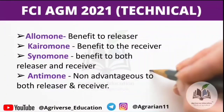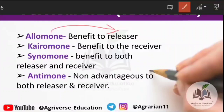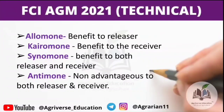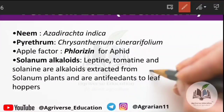Sixth question: examples of allelochemicals. Allomones benefit the releaser and have a toxic effect on the receiver. Kairomones provide benefit to the receiver. Synomones benefit both releaser and receiver. Antimones give no advantage to either the releaser or the receiver. These are examples of allelochemicals that you need to remember.